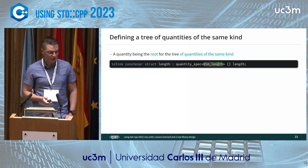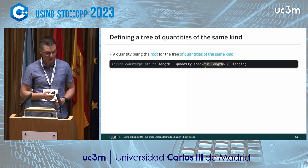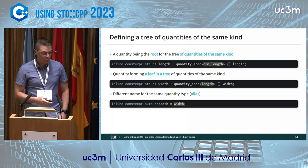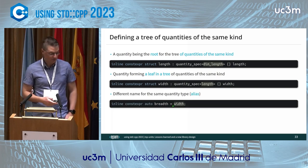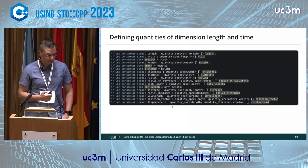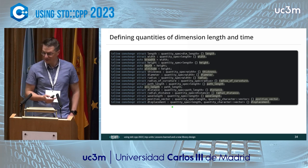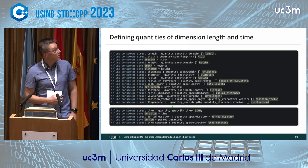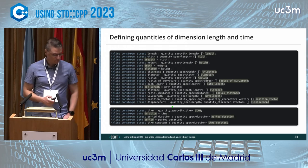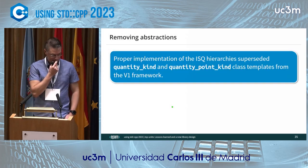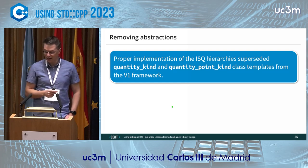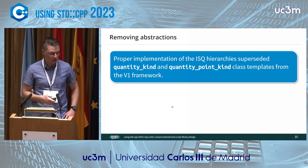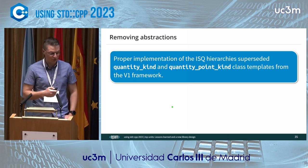Dimension alone isn't enough to specify all properties of a quantity. Multiple quantities may share the same dimension — frequency, modulation rate, and activity are all time to the minus one. There are also quantities of the same kind: length, width, altitude, distance, radius, wavelength, position vector — all the same dimension but you want to treat them differently with strong typing. Quantities may also have different character — scalars, vectors, tensors — and some are defined as non-negative.